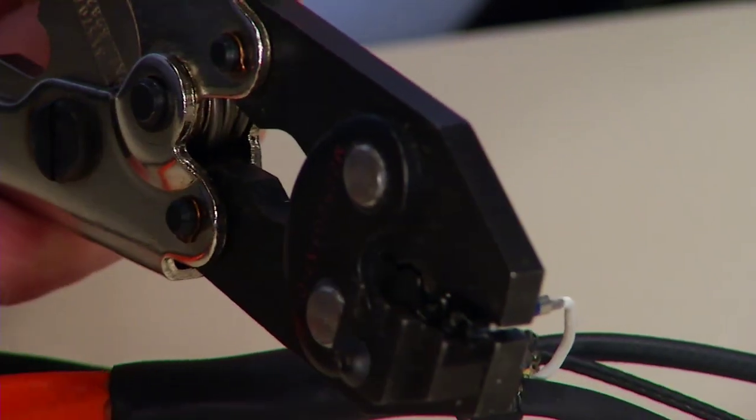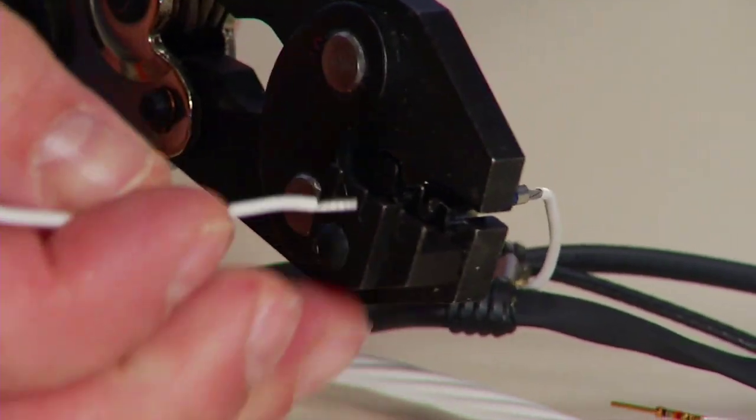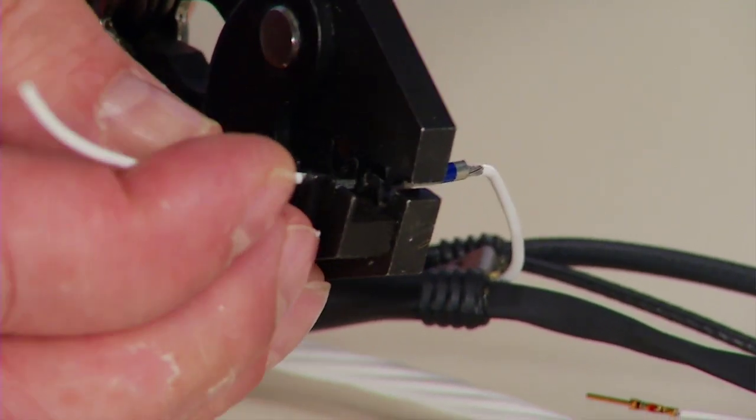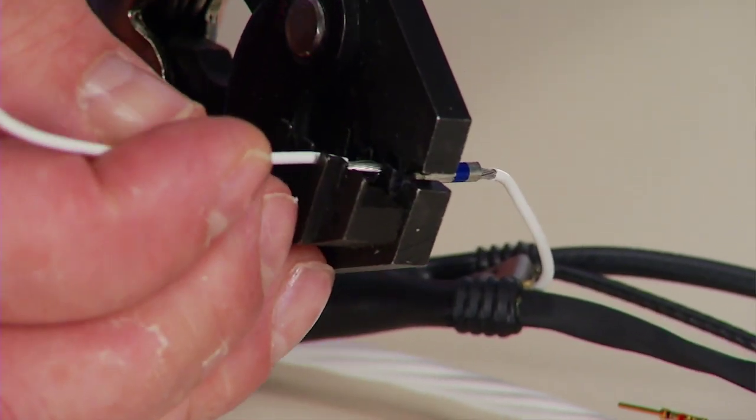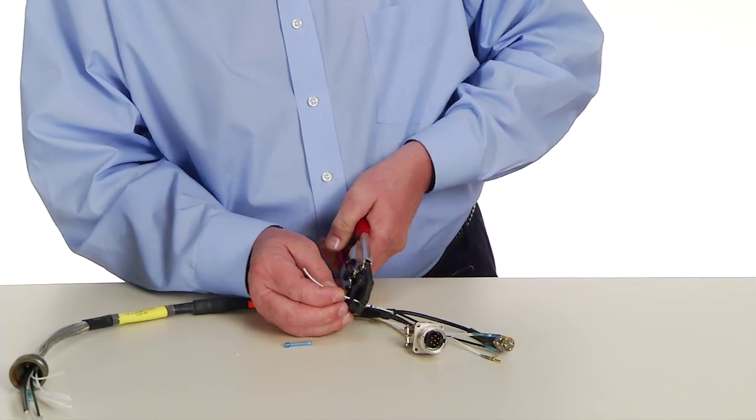Then slide the 3-inch piece of the wire into the opposite side of the crimp barrel and again crimp with the AD1377 tool.